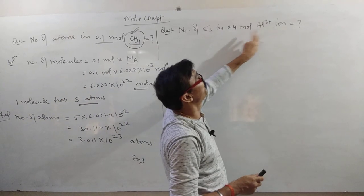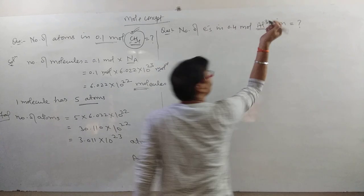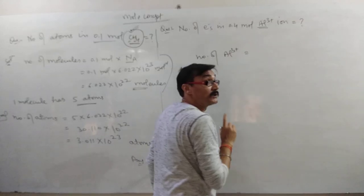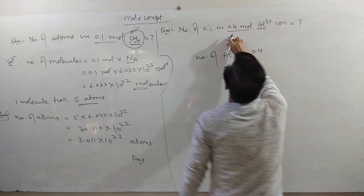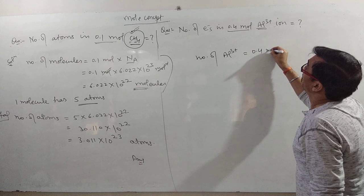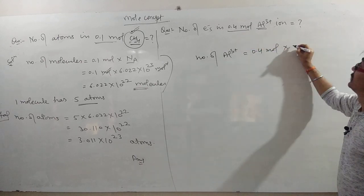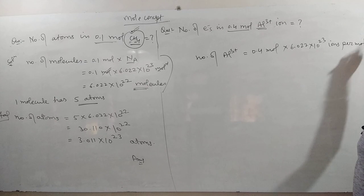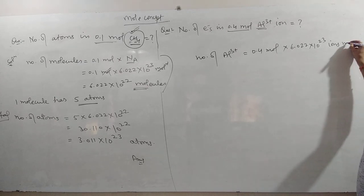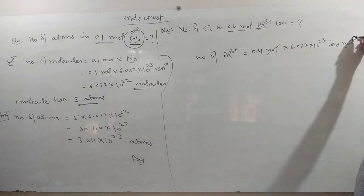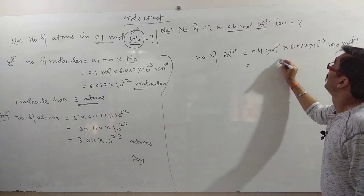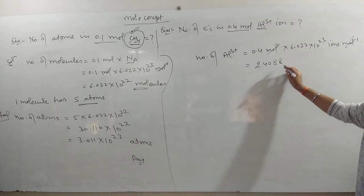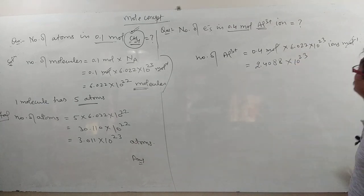Next question: find the number of electrons in 0.4 mole aluminum ion. The particle here is the aluminum ion. First, calculate the number of aluminum ions: number of ions equals 0.4 mole into 6.022 into 10 to the power 23 ions per mole. Mole cancels, giving 2.4088 into 10 to the power 23 ions.